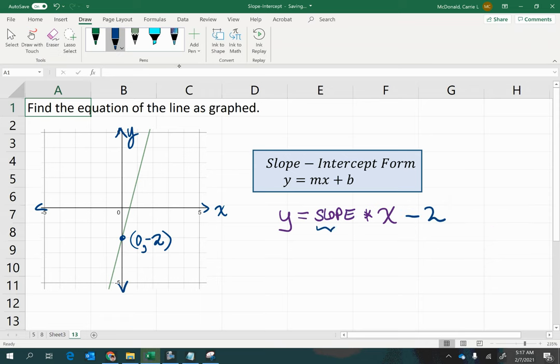All right, now what about the slope? That is your rise divided by run. So if you just begin from the point we already have here and start counting up and over, I'm going to count to another point.